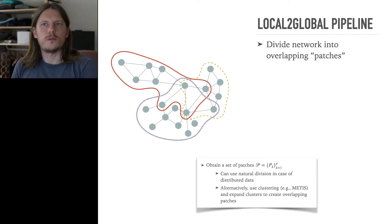The first step in our local-to-global pipeline is to divide the network into overlapping patches. We can use the natural division in case of distributed data, or otherwise we use clustering methods to partition the network.